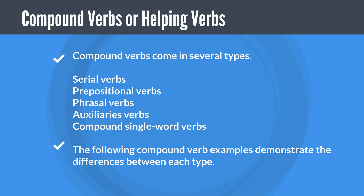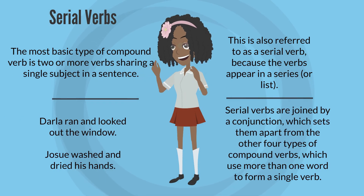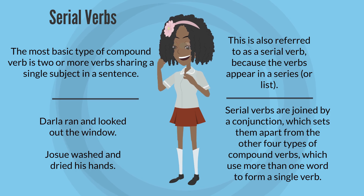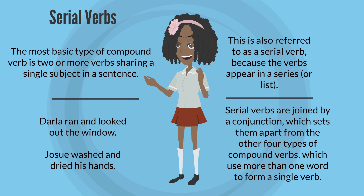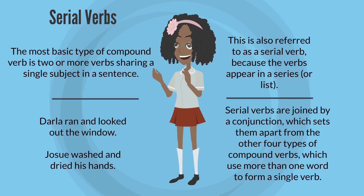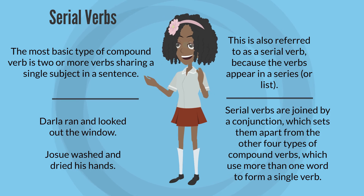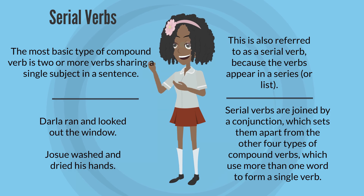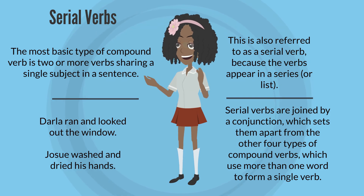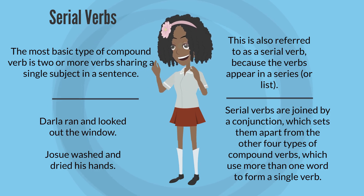The most basic type of compound verb is two or more verbs sharing a single subject in a sentence. This is also referred to as a serial verb, because the verbs appear in a series or list. Examples: 'Darla ran and looked out the window.' 'Josue washed and dried his hands.'